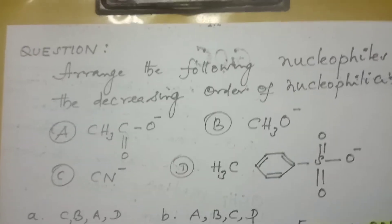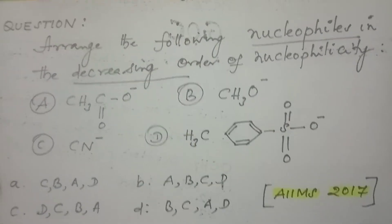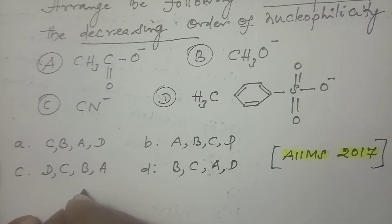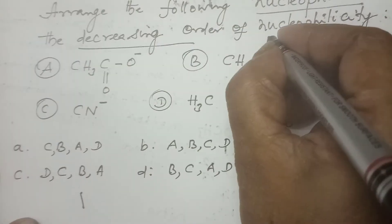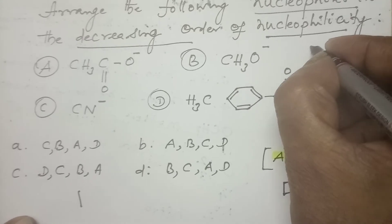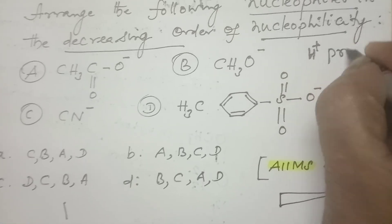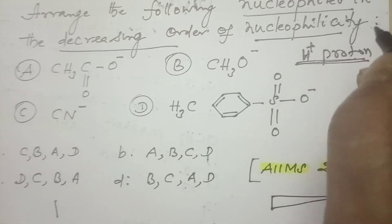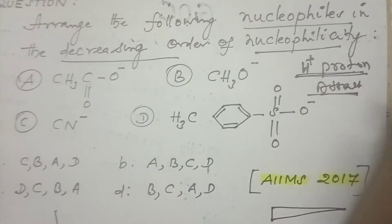Now let us go to the next question. Arrange the following nucleophiles in the decreasing order of nucleophilicity — AIMS 2017. Decreasing order means this is the format to write. What is the meaning of nucleophilicity? Nucleophile — nucleophilicity means we can call it as a proton lover, or attraction of proton. Keep it in mind: that which attracts protons is called a nucleophile.